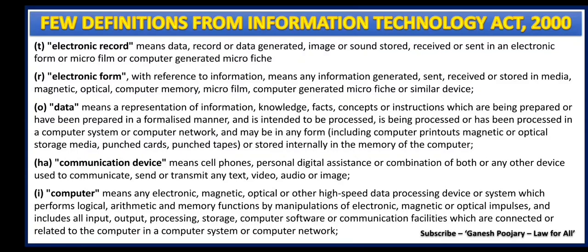Section 2HA defines Communication Device, which means cell phones, personal digital assistance or combination of both, or any other device used to communicate, send or transmit any text, video, audio or image. Finally, Section 2I discusses what is a computer. Computer means any electronic, magnetic, optical or other high-speed data processing device or system which performs logical, arithmetic and memory functions by manipulation of electronic, magnetic or optical impulses, and includes all input, output, processing, storage, computer software or communication facilities connected or related to the computer in a computer system or computer network.